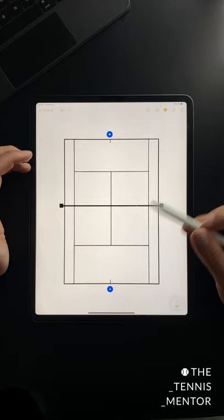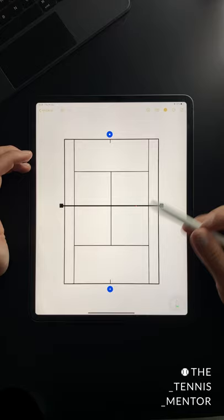It's called the bow tie drill and it's very simple. Player 1 will send the ball cross court. Player 2 will return the ball down the line.